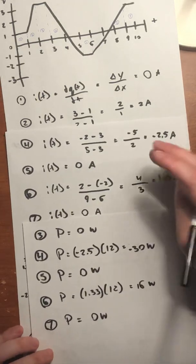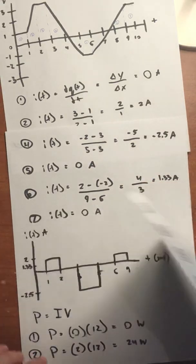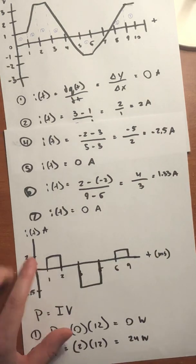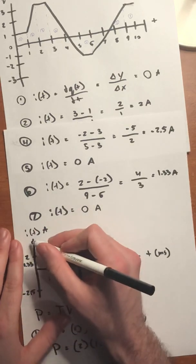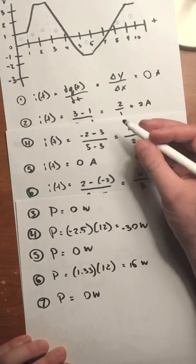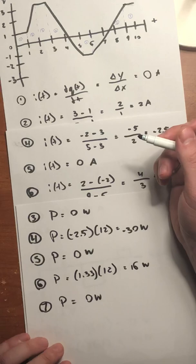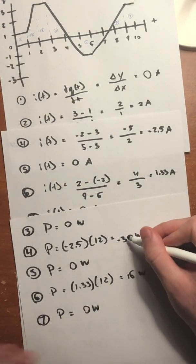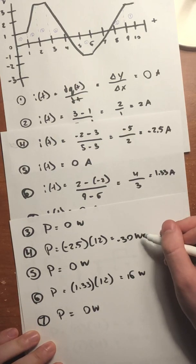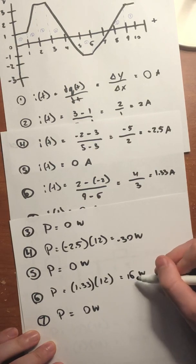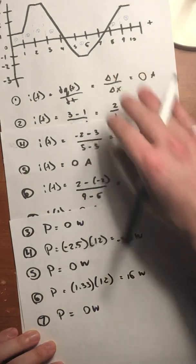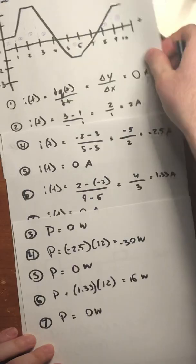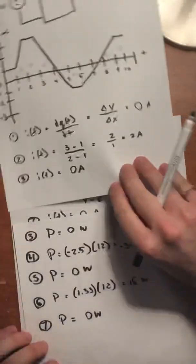If we were to graph the power, it would look exactly the same shape as the current graph, but scaled by a factor of 12 — so the same rectangular box shape, just with different magnitudes on the y-axis. As we saw in the previous video, negative power means the power is being supplied to the circuit, while positive power means it is being absorbed by the circuit. This is the first-principles approach to analyzing the power of a circuit we don't fully know, determined from the charge graph.